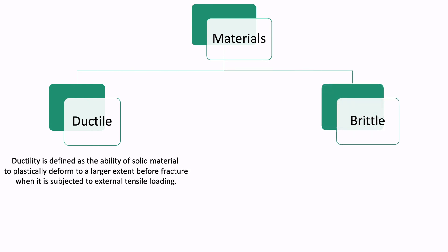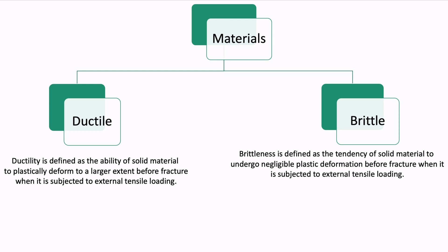Ductility is defined as the ability of solid materials to plastically deform to a larger extent before fracture when subjected to an external tensile loading. Whereas brittleness is defined as the tendency of solid material to undergo negligible plastic deformation before fracture when it is subjected to an external loading.